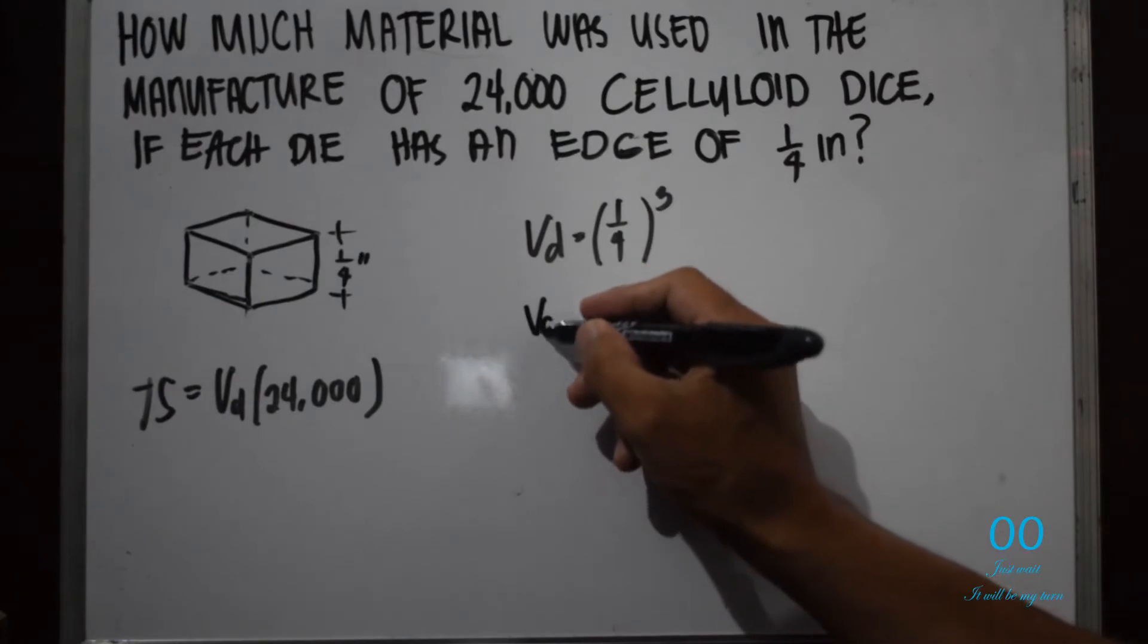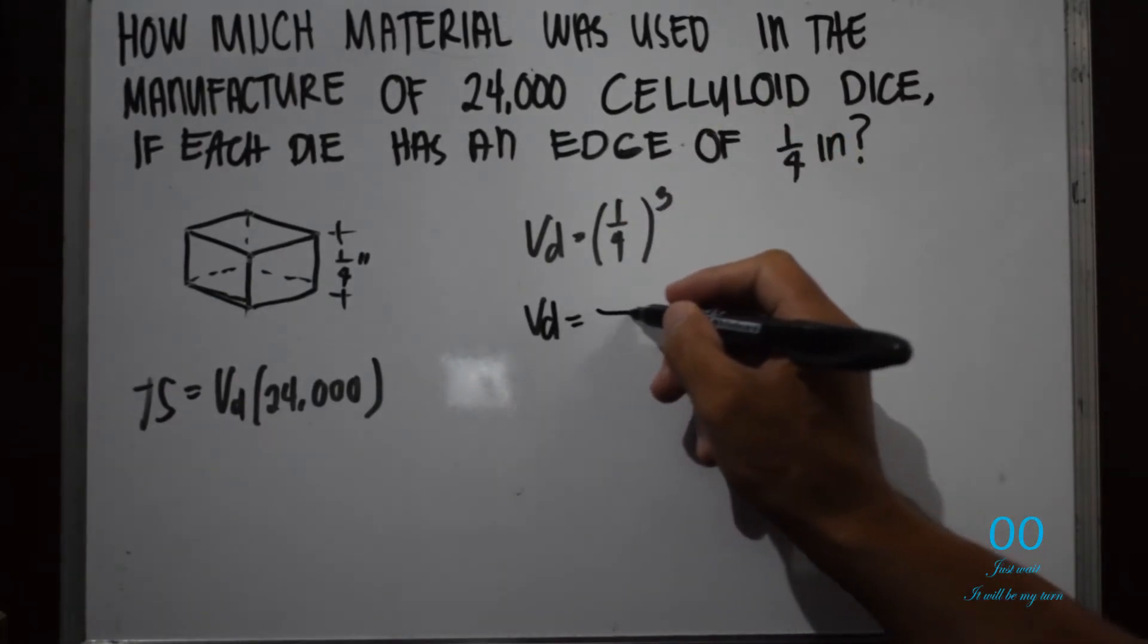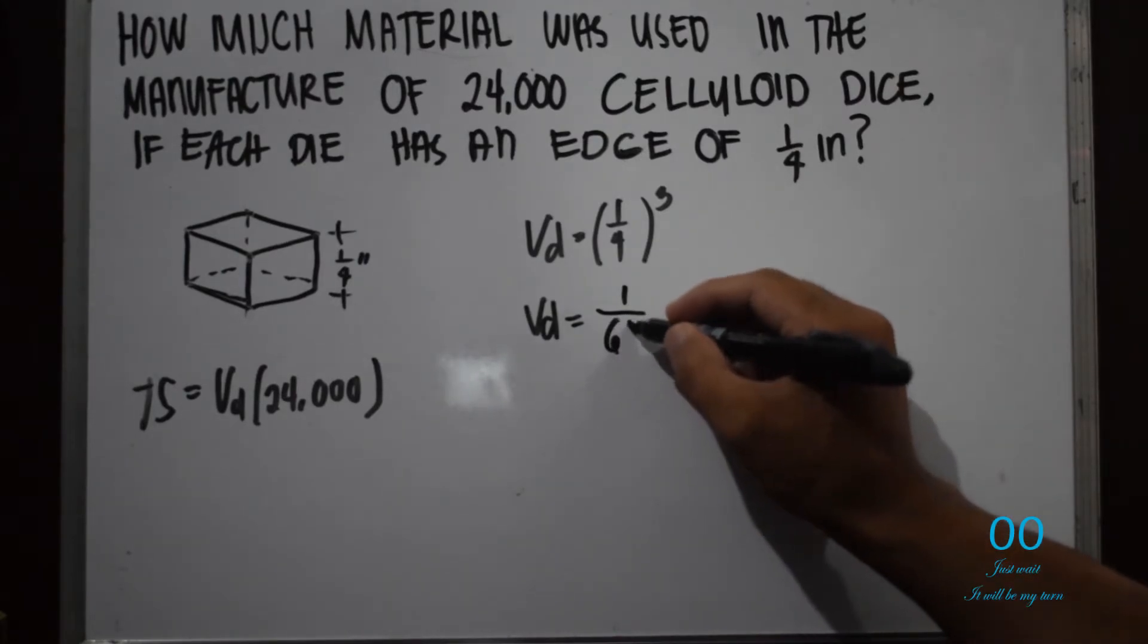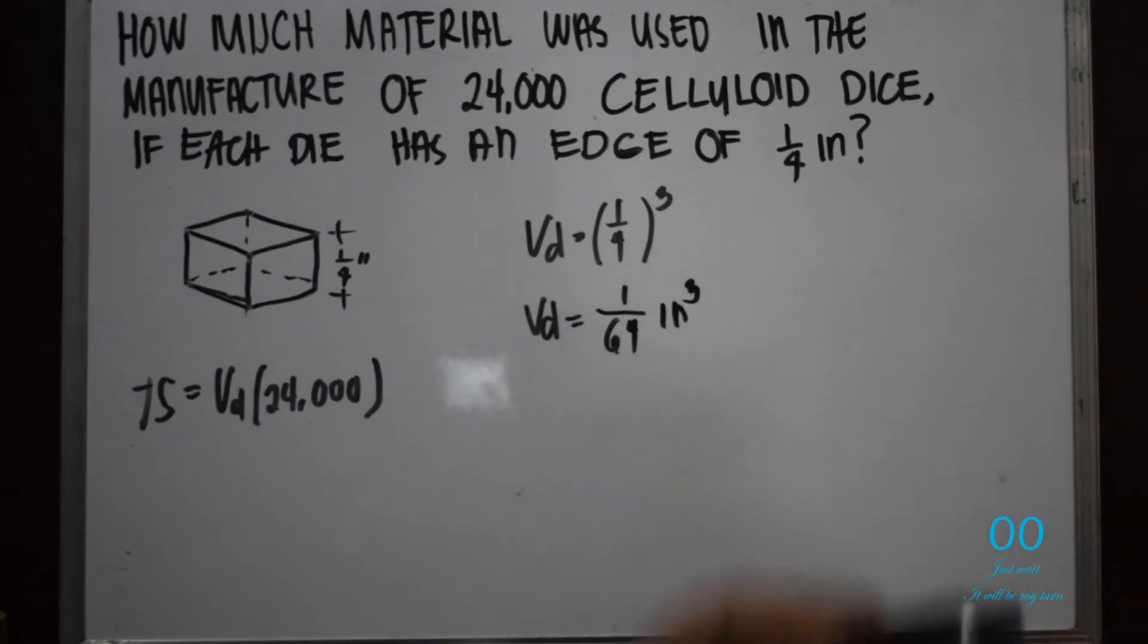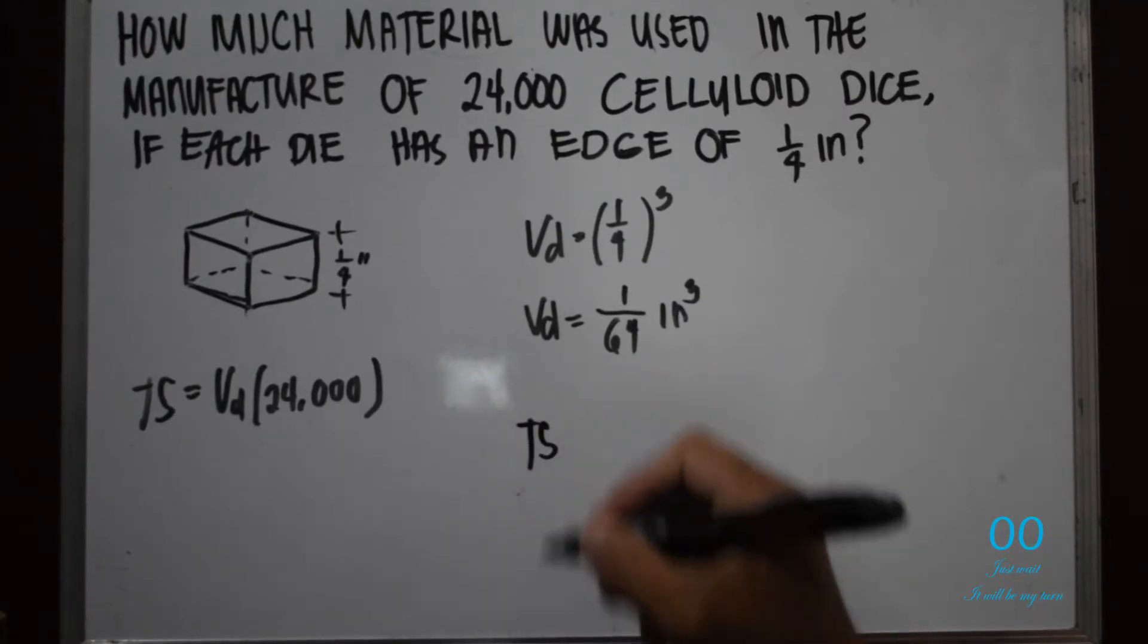The volume now is 1 raised to 3 is 1, 4 raised to 3 is 64. So this is cubic inch, 1 over 64 cubic inch.